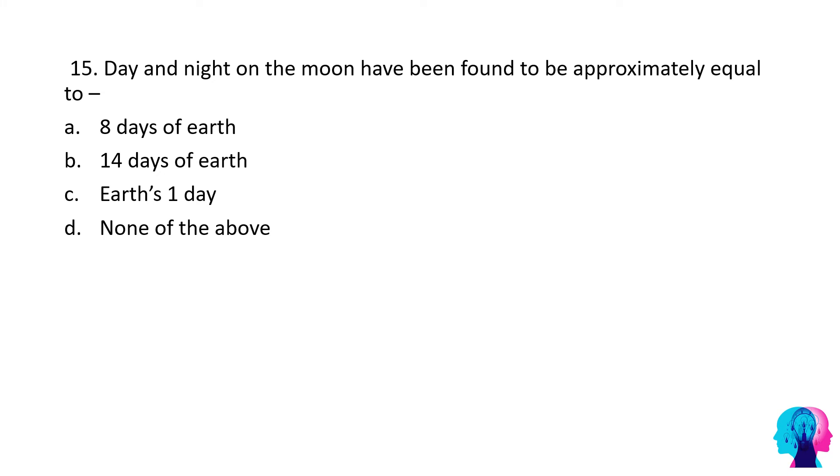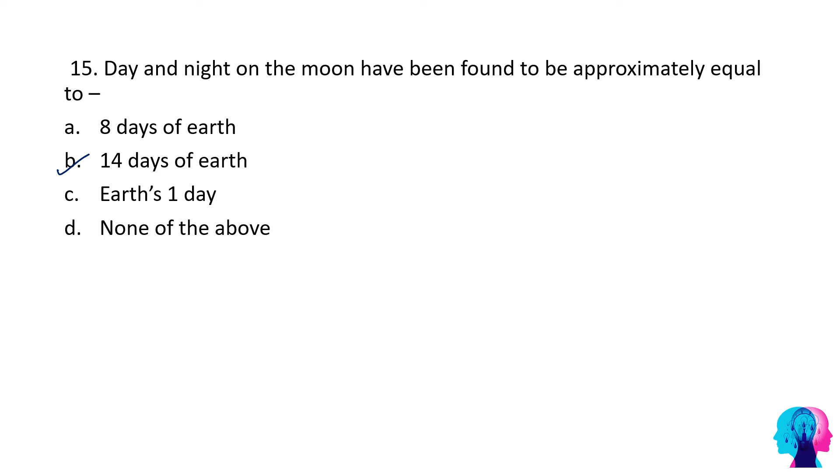Next question: Day and night of the moon have been found to be approximately equal to 8 days of earth, 14 days of earth, earth's one day, or none of the above? The correct option would be 14 days of earth. If we define a day as the amount of time it takes the sun to return to the same point on the moon's horizon after the moon completes a new revolution around the earth, then every lunar day lasts for 29.5 earth days.